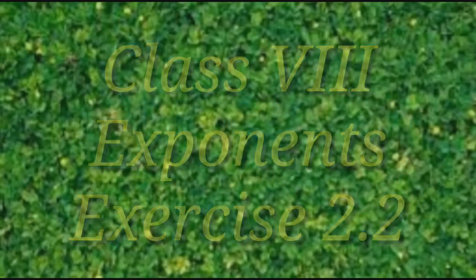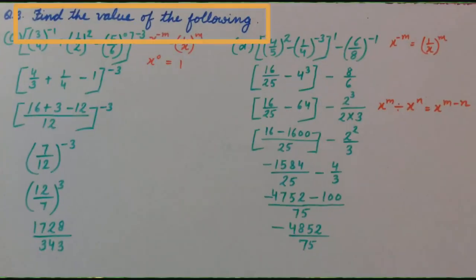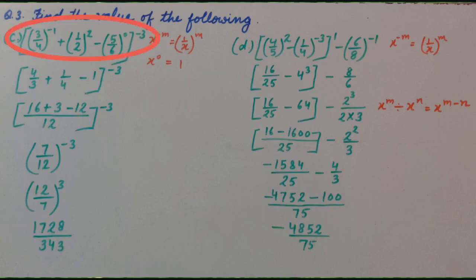Let's continue exercise 2.2, Question No. 3: Find the value of the following — (3/4) whole raise to the power minus 1, plus (1/2) whole raise to the power 2, minus (5/6) whole raise to the power 0, in rectangular bracket, whole raise to the power minus 3. Seeing this part, what comes to your mind? Which law can we use?